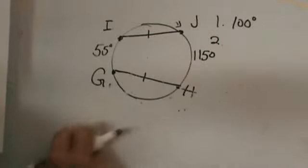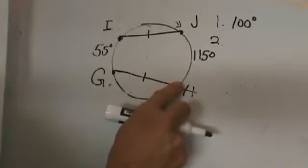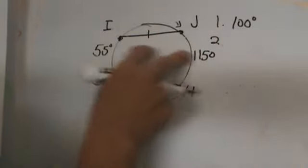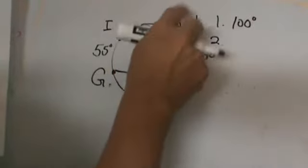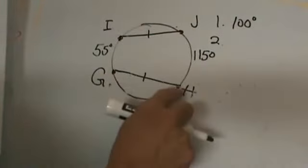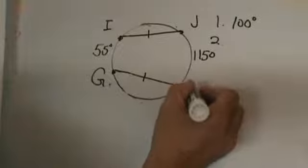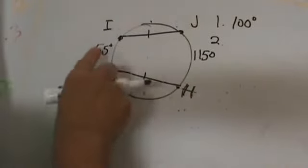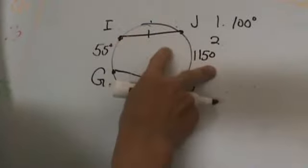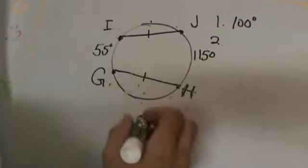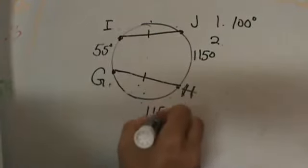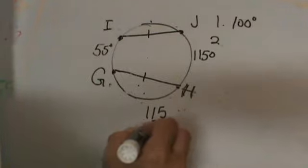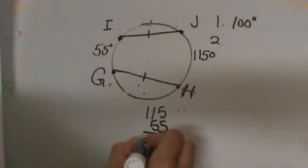We're supposed to figure out what GH is. We know these two, but we don't know IJ and we don't know GH, but we do know that these two arcs are congruent. So what we can do is take these two arcs that are given and add them together. So 115 plus 55 gives us 170.